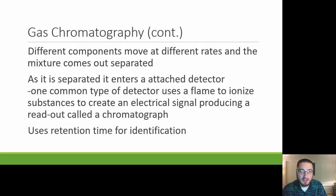Different components move at different rates. As it is separated, it enters an attached detector. One common type of detector uses a flame to ionize the substances that come through those columns to create an electrical signal producing a readout called a chromatograph. It uses retention time, or how long does it take for that specific substance in the mixture to come through the column, as a way to identify the specific substances.